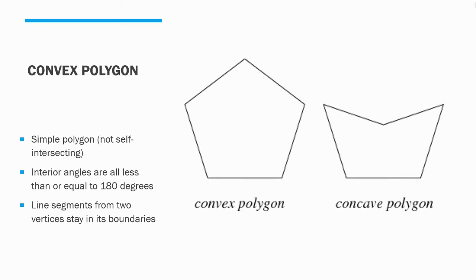All interior angles of a convex polygon are less than or equal to 180 degrees. A strict convex polygon needs all angles less than 180 degrees. A convex polygon also has all line segments from two vertices staying within its boundaries.